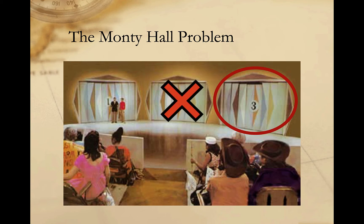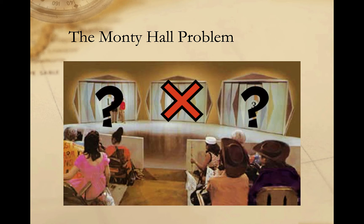At that point — and this is the important part — Monty asks: you originally chose door number three, would you like to stick with door number three, or would you like to switch to door number one? What would you do? Would you stick to your initial choice of door number three, or would you switch to door number one? And does sticking with your initial choice or switching to the other door change your odds of winning?